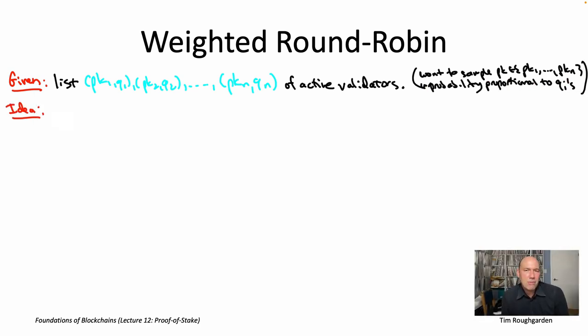So the idea is we're going to reframe the problem a little bit. Rather than thinking about sort of sampling from this list just one at a time with probability proportional to stake, let's actually think about just generating a whole batch of samples all at once. So let's think about a procedure, and maybe whenever you invoke it, it gives you back a sequence of like 10,000 samples. So it gives you a list of 10,000 public keys. Each public key in that list is going to be one of PK1, PK2, up to PKN. So it's going to be one of the active validators. A given active validator may occur many times amongst this sequence of 10,000.